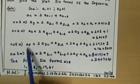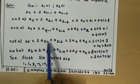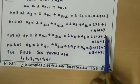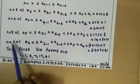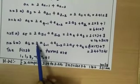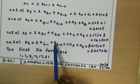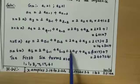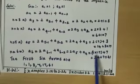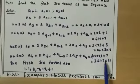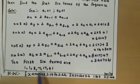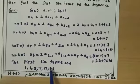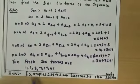For n = 5: a5 = 2·a4 + a3 = 2 into 7 plus 3 = 14 + 3 = 17. For n = 6: a6 = 2·a5 + a4 = 2 into 17 plus 7 = 34 + 7 = 41. So the first 6 terms are 1, 1, 3, 7, 17, 41.